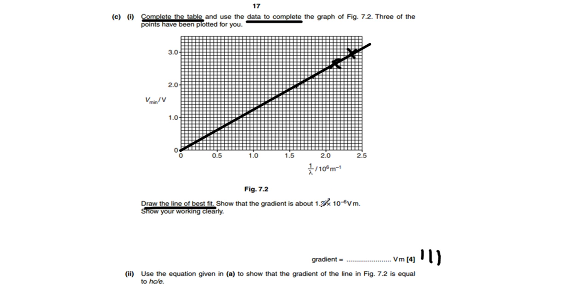Now here we needed to show that the gradient was about this. So we needed to pick our two points on our line. Let's say that point and that point. And then we construct our gradient triangle. And when we do that, and then when we do our calculations here, we should find that we get an answer that is approximately equal to 1.2 times 10 to the minus 16. And that would get your fourth mark there. So four marks available for that one.